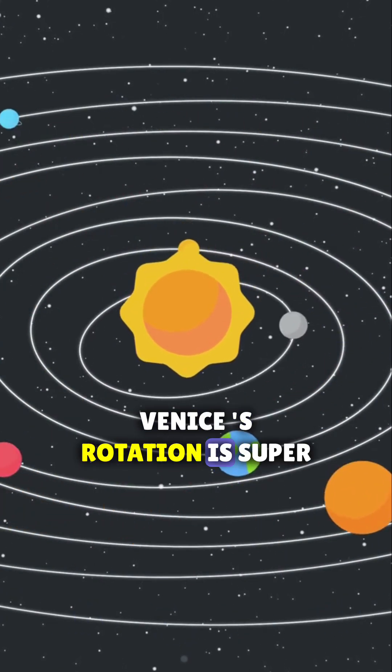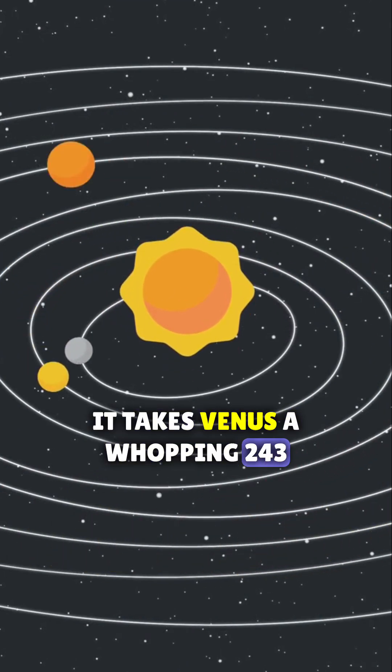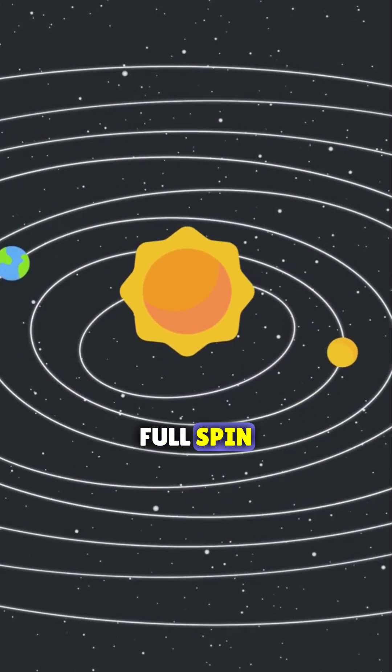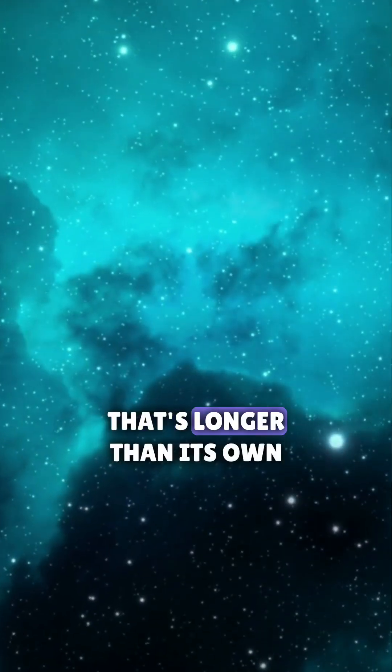Venus's rotation is super slow. It takes Venus a whopping 243 Earth days to complete just one full spin on its axis. That's longer than its own year.